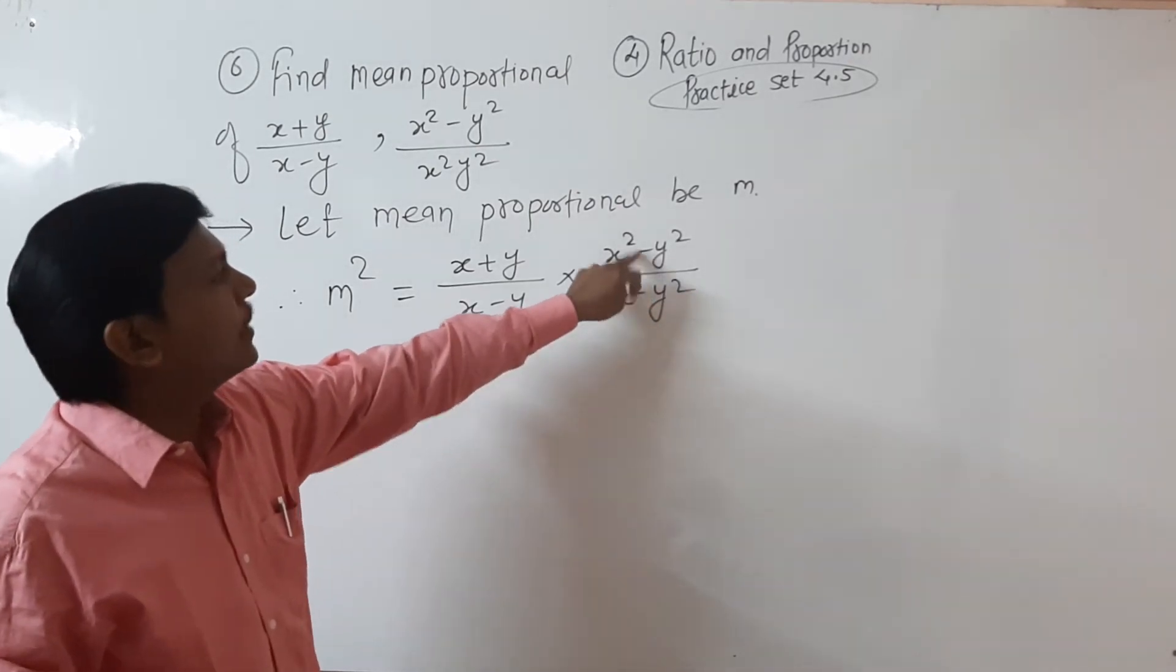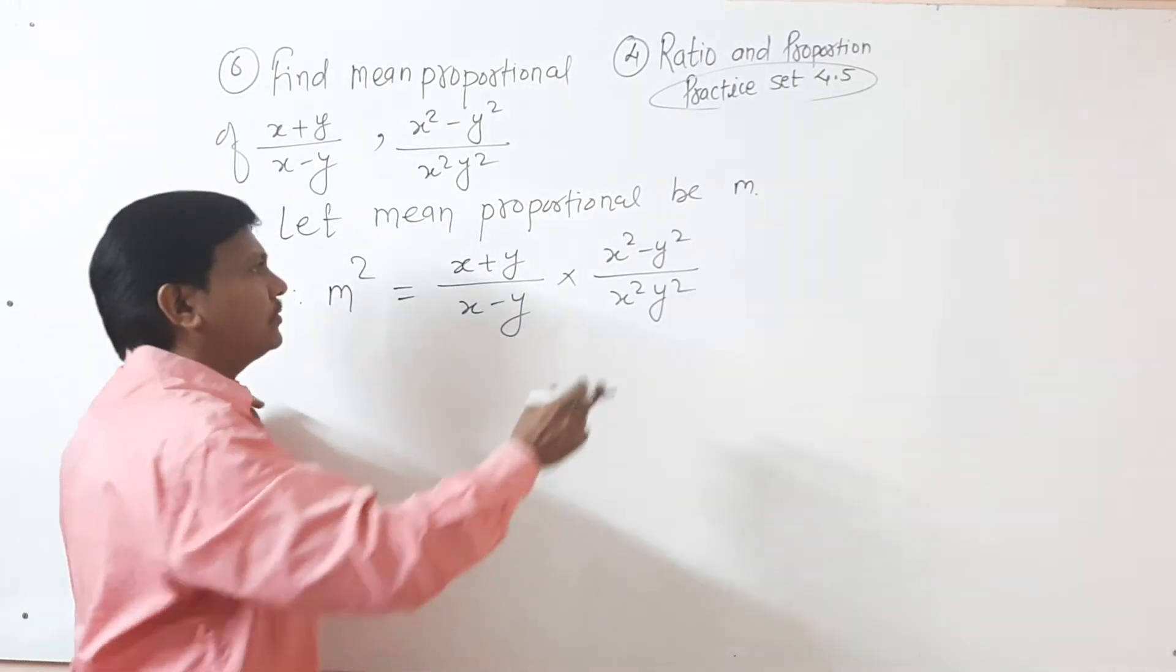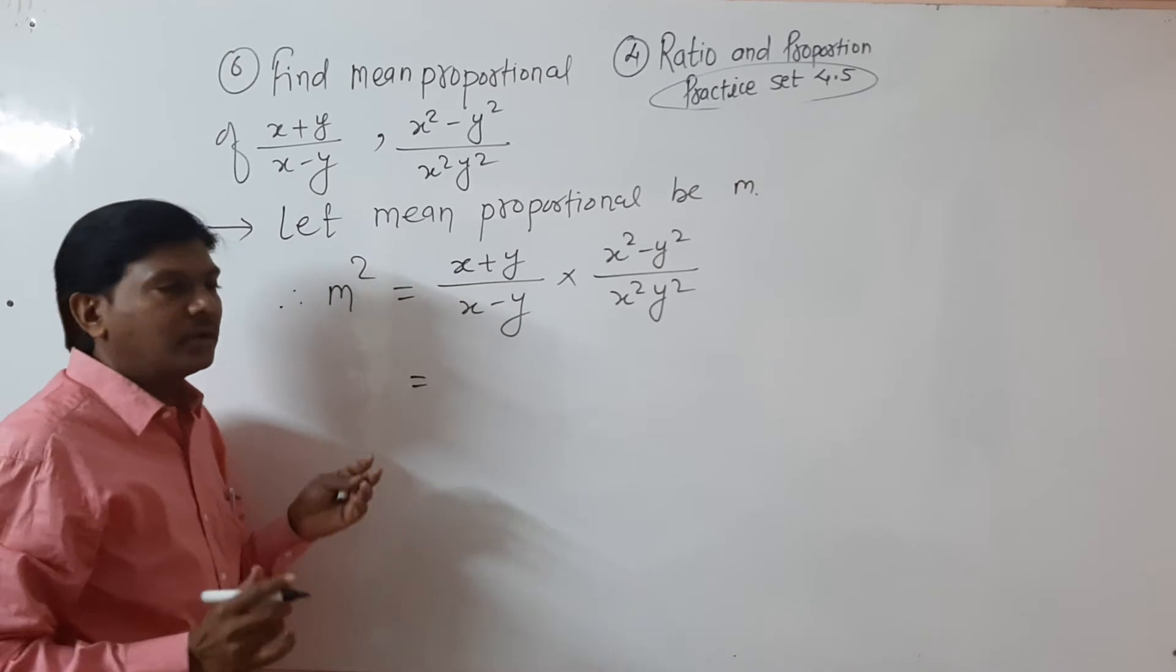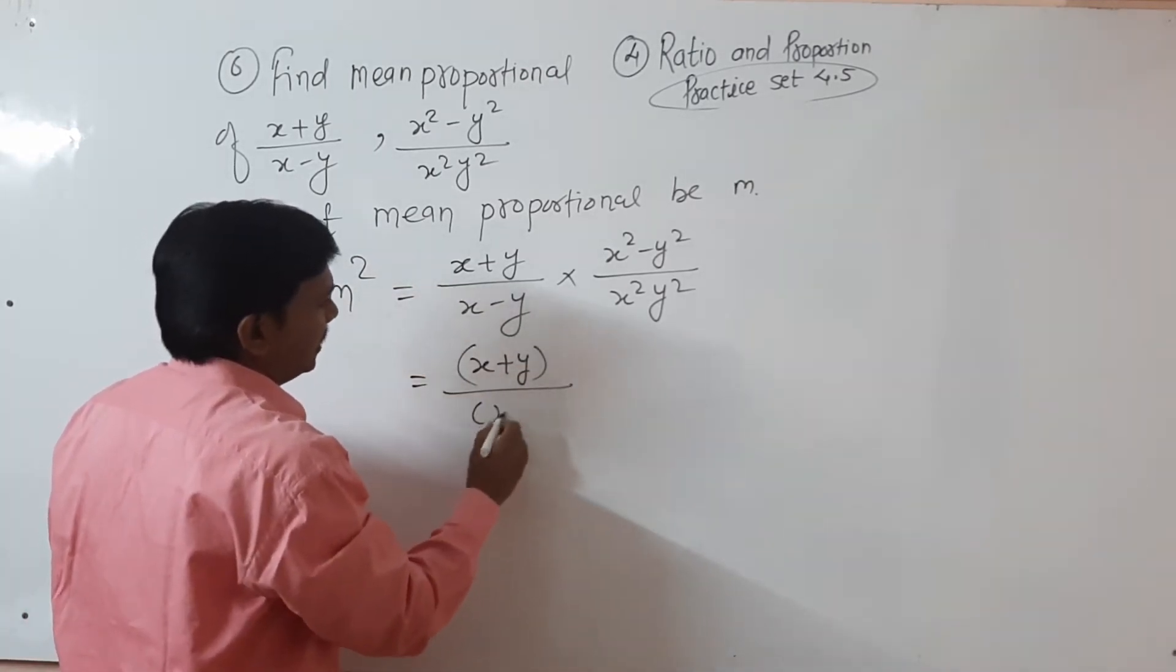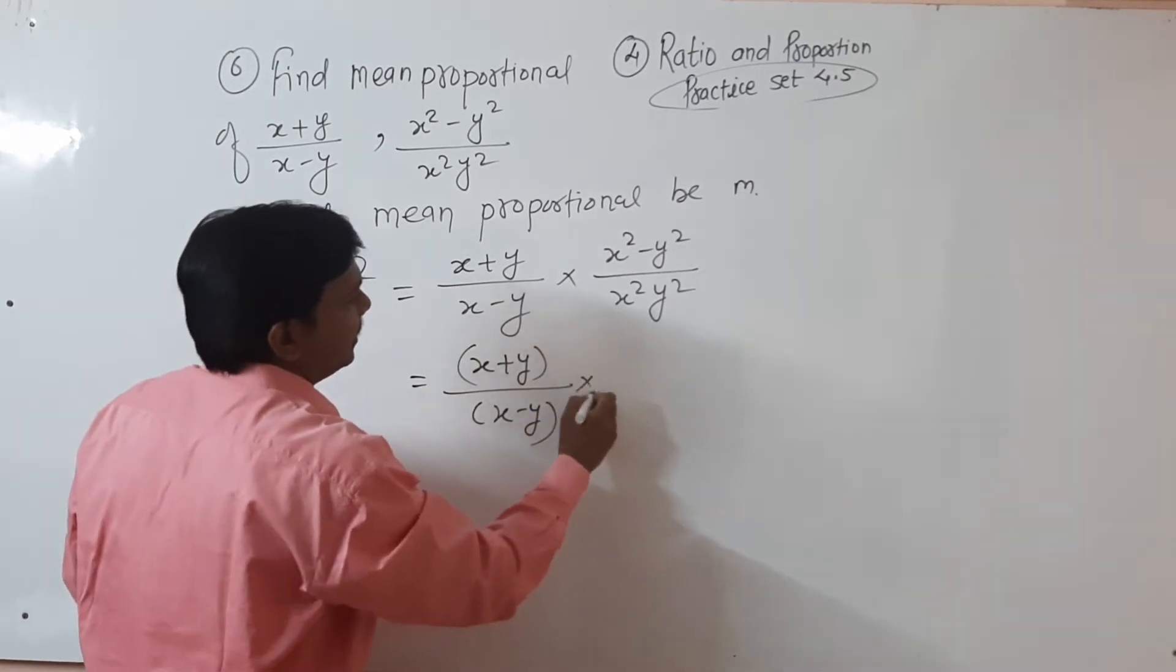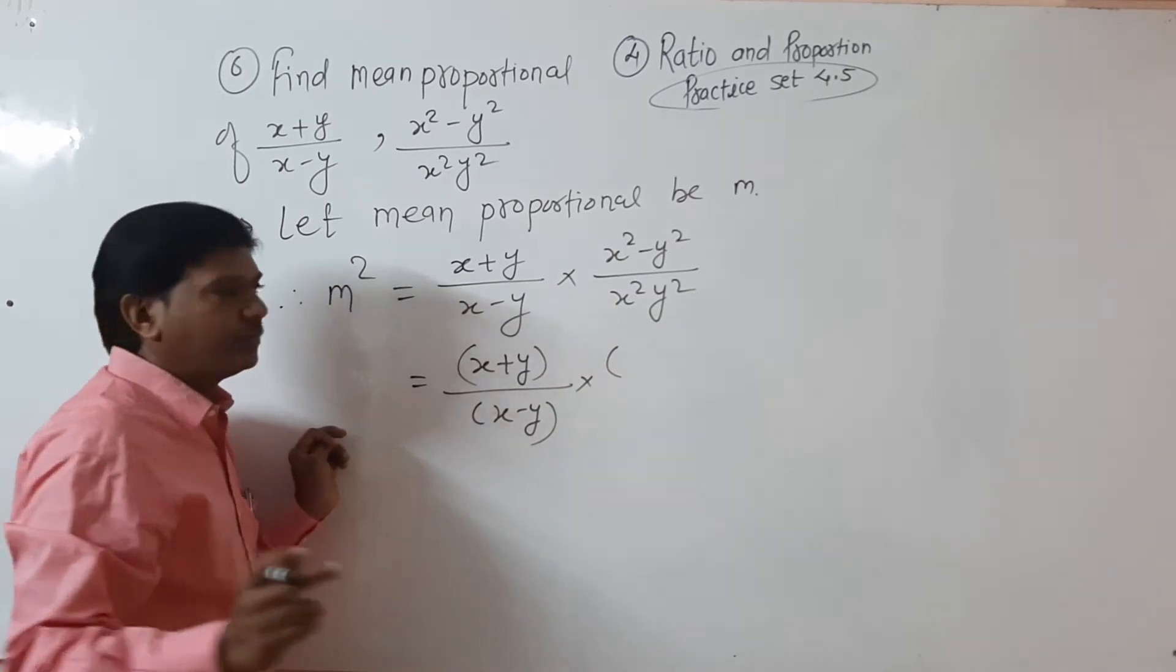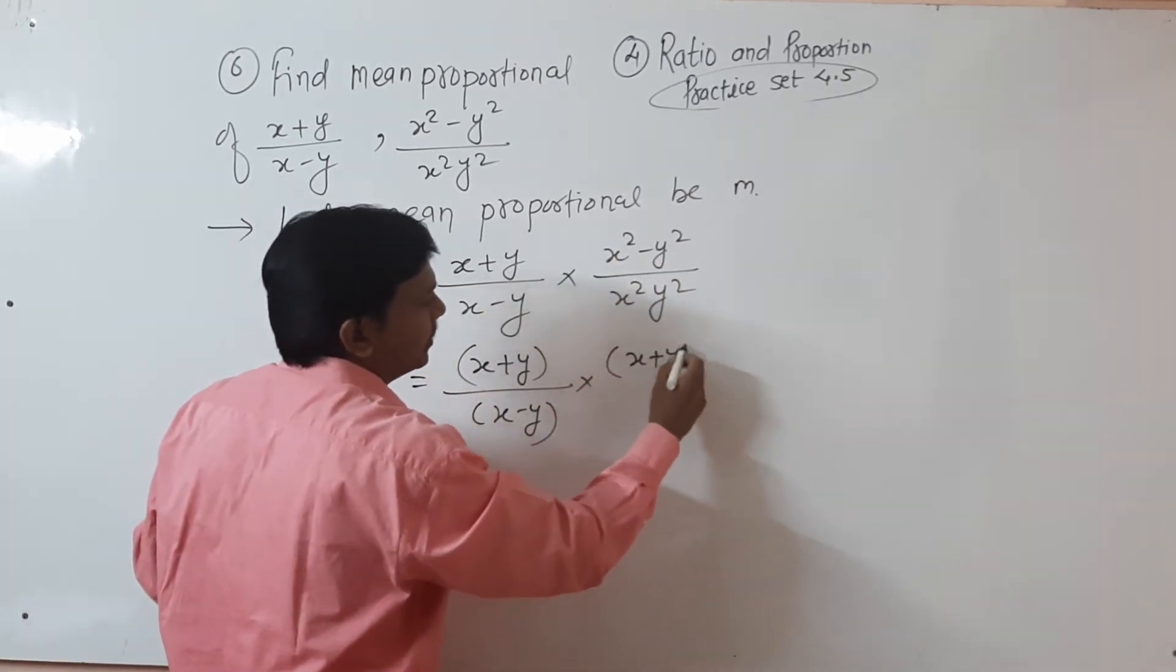You know a²-b² equals (a+b)(a-b). So here you can see we can cancel. (x+y)/(x-y) times, using formula a²-b², that is (a+b)(a-b). In place of a and b we use x, so (x+y)(x-y)/(x²y²).